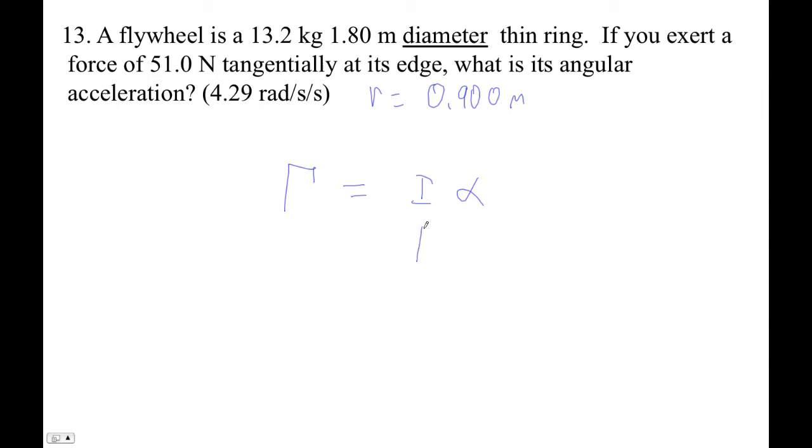I think what we're going to do is find the thin ring moment of inertia, which is mr squared, where m is 13.2 and r is 0.9. Then we've got 51 newtons at the edge.